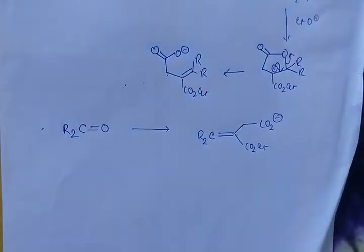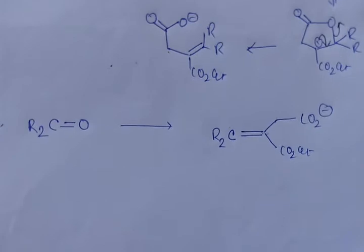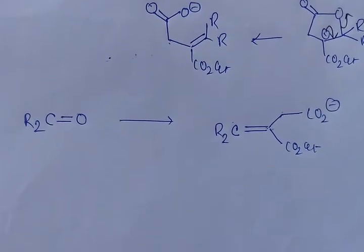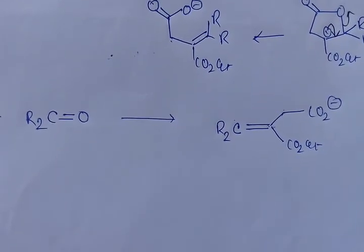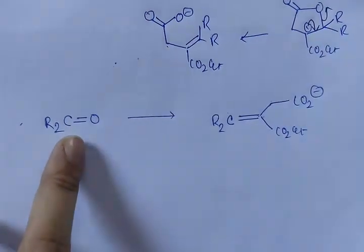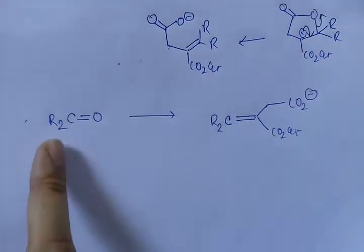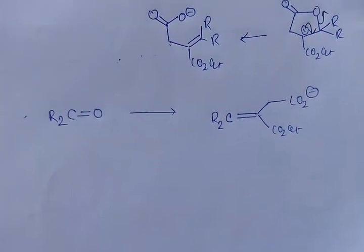So Stobbe condensation leads to the attachment of three-carbon chain to a ketonic carbon atom. And in Stobbe condensation, ketone without any alpha hydrogen is used. If it has any alpha hydrogen, then it will undergo self-condensation and self-condensation will get preference over Stobbe condensation.